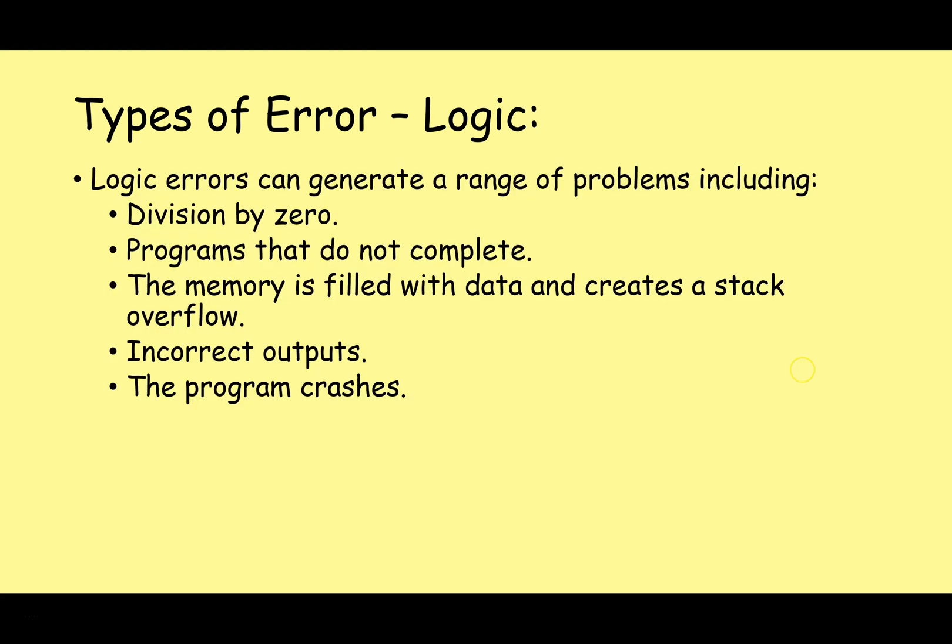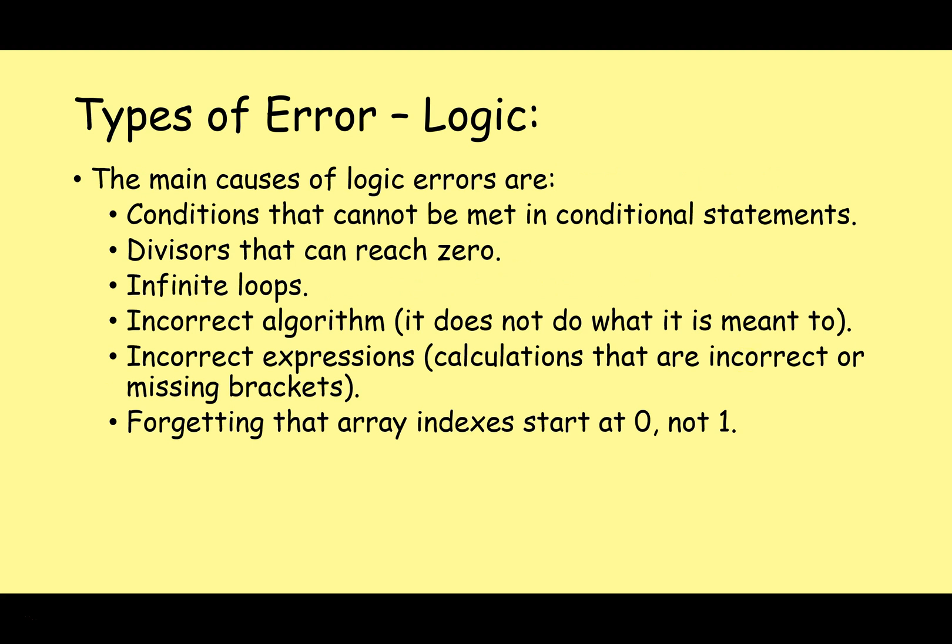So when we have logic errors we can see a lot of problems in our code. Some examples of what we might see that suggests we could have a logic error might be division by zero, programs that do not complete, our memory gets filled with data and we get stack overflow errors, the outputs are incorrect, the program crashes. So what are the main causes of logic error? Well, we've got conditions that cannot be met in conditional statements. We get these all mixed up easily and that can cause infinite loops or conditions not being executed correctly. We might have divisors that can reach zero. We might get stuck in infinite loops.